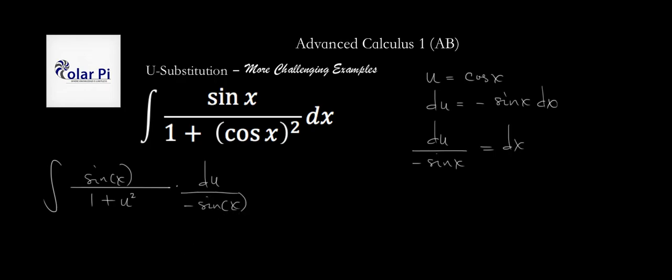So now, this here and that there are going to cancel. So then, I'm going to get, and I can take out the negative in front of the integral. So, I'm going to get negative integral of 1 divided by, rather, which is the same thing as 1 over 1 plus u squared du.